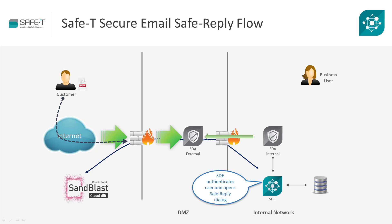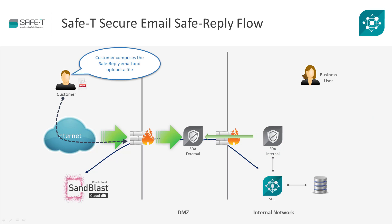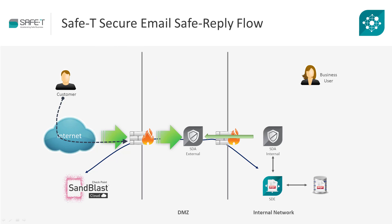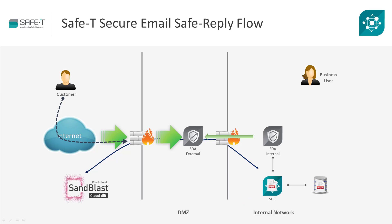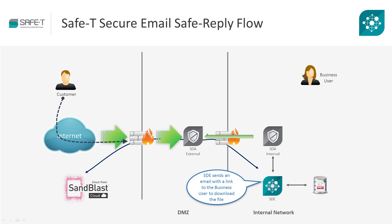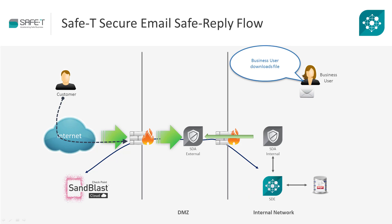The recipient composes the safe reply email and uploads a file. SafetyHDS uploads the file to CheckPoint SandBlast to be scanned. CheckPoint SandBlast then verifies the file and confirms to SafetyHDS. SafetyHDS then sends an email with a link to the file to the business user.